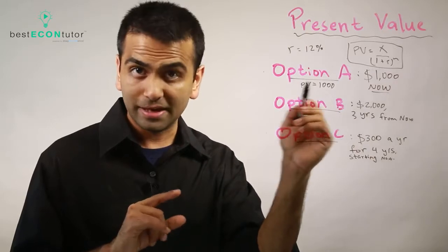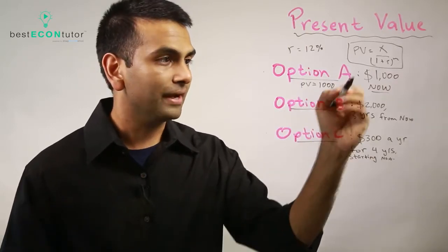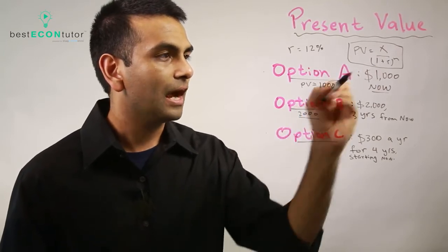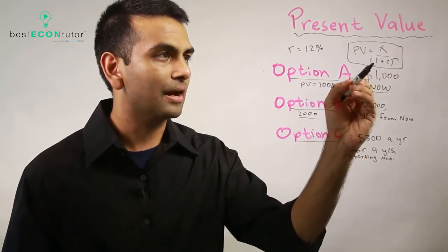So the way we're gonna find it is you're given two thousand dollars, so that's your X. Two thousand dollars given how many years from now? Three years from now.